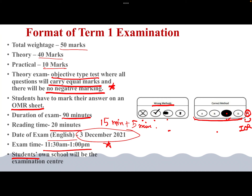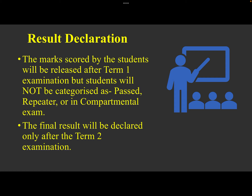Students' own school will be their examination center — there will not be a separate examination center. Regarding result declaration, the students will not be categorized as passed, failed, or put in the compartmental exam category after Term 1. Only the marks scored by the students will be released after the Term 1 examination is over. The final result declaring students as passed, failed, or compartmental will be done after the Term 2 examination.